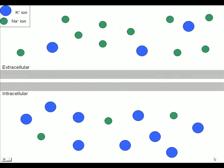In living cells, the concentration of sodium is much greater outside the cell than inside, and potassium is much greater inside the cell than outside.